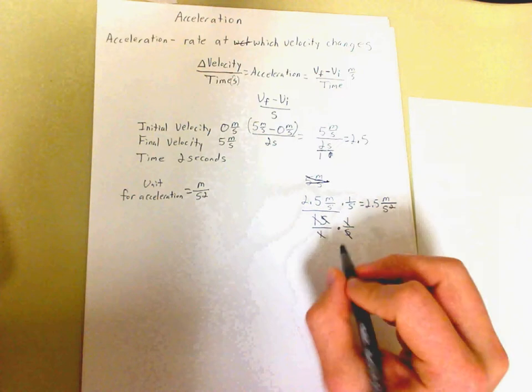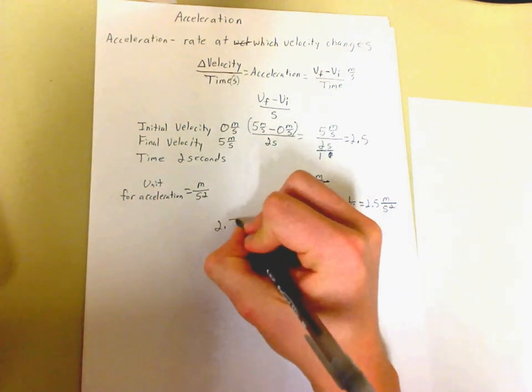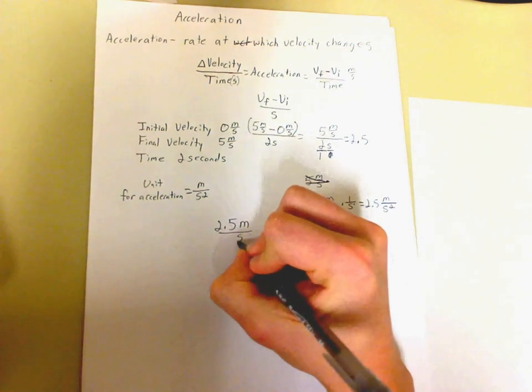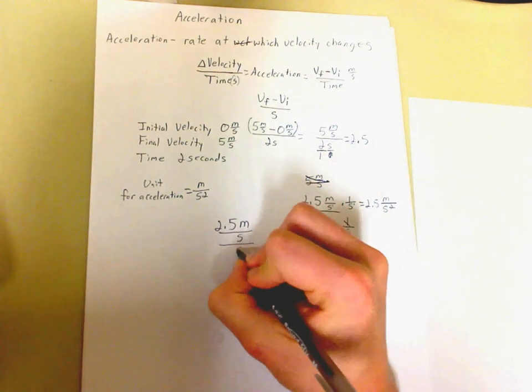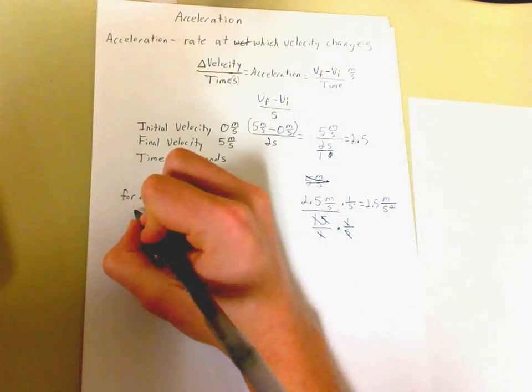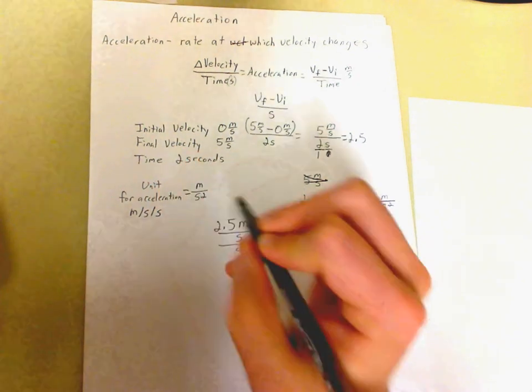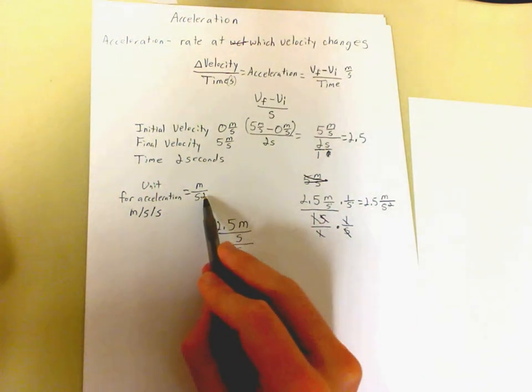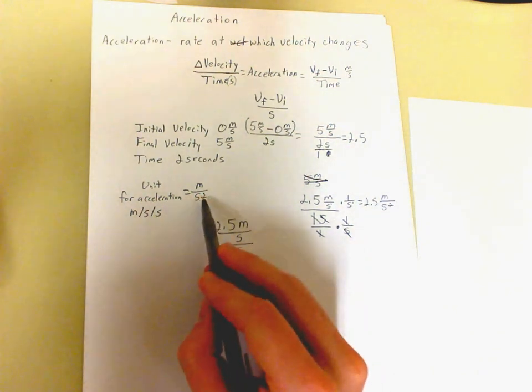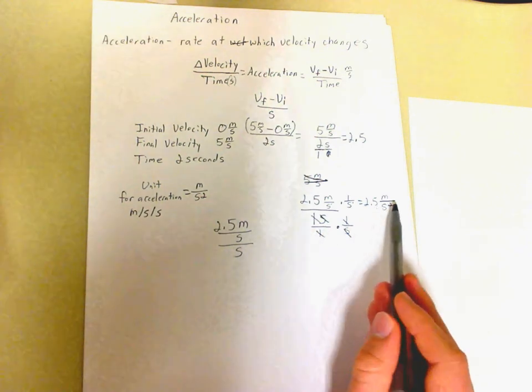Let's look at this another way. If we go back to the 2.5, remember we had meters per second and then we had seconds on bottom. This would be the same thing as meters per second per second. It's the same thing as meters per second squared. This is just the long version of that. And remember, we worked out the math to get meters per second squared here.